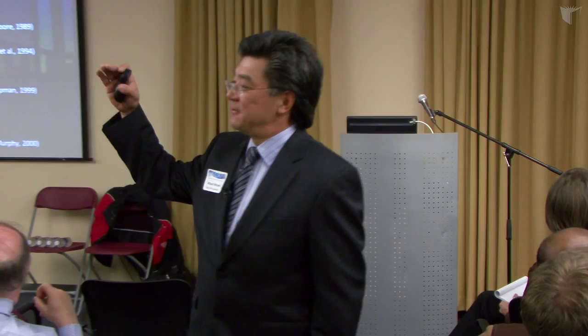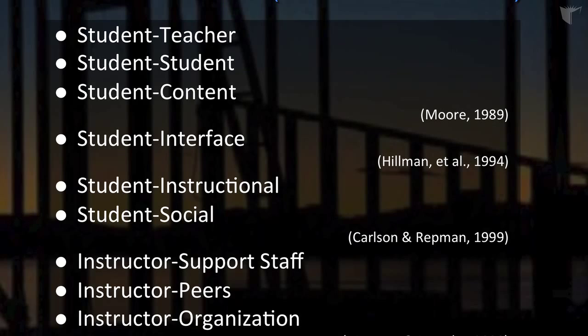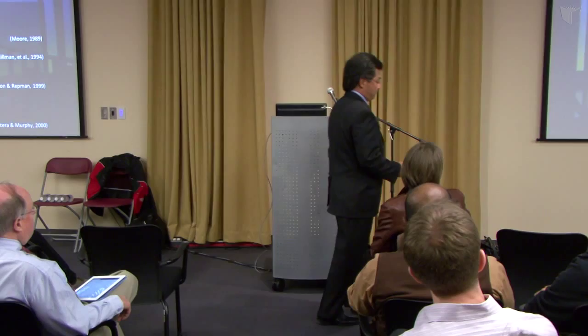Many have published frameworks that classify the different types of interactions that may occur online. The most well-known, published by Michael Moore, suggests student-teacher, student-student, and student-content interactions. With advances in technology, Hillman and colleagues suggested that student-interface interaction is also critical. Others have talked about student-social interactions, and Montero Murphy at the University of Texas noted that instructor support staff, peers, and organizational interactions are also critical for facilitating e-learning.